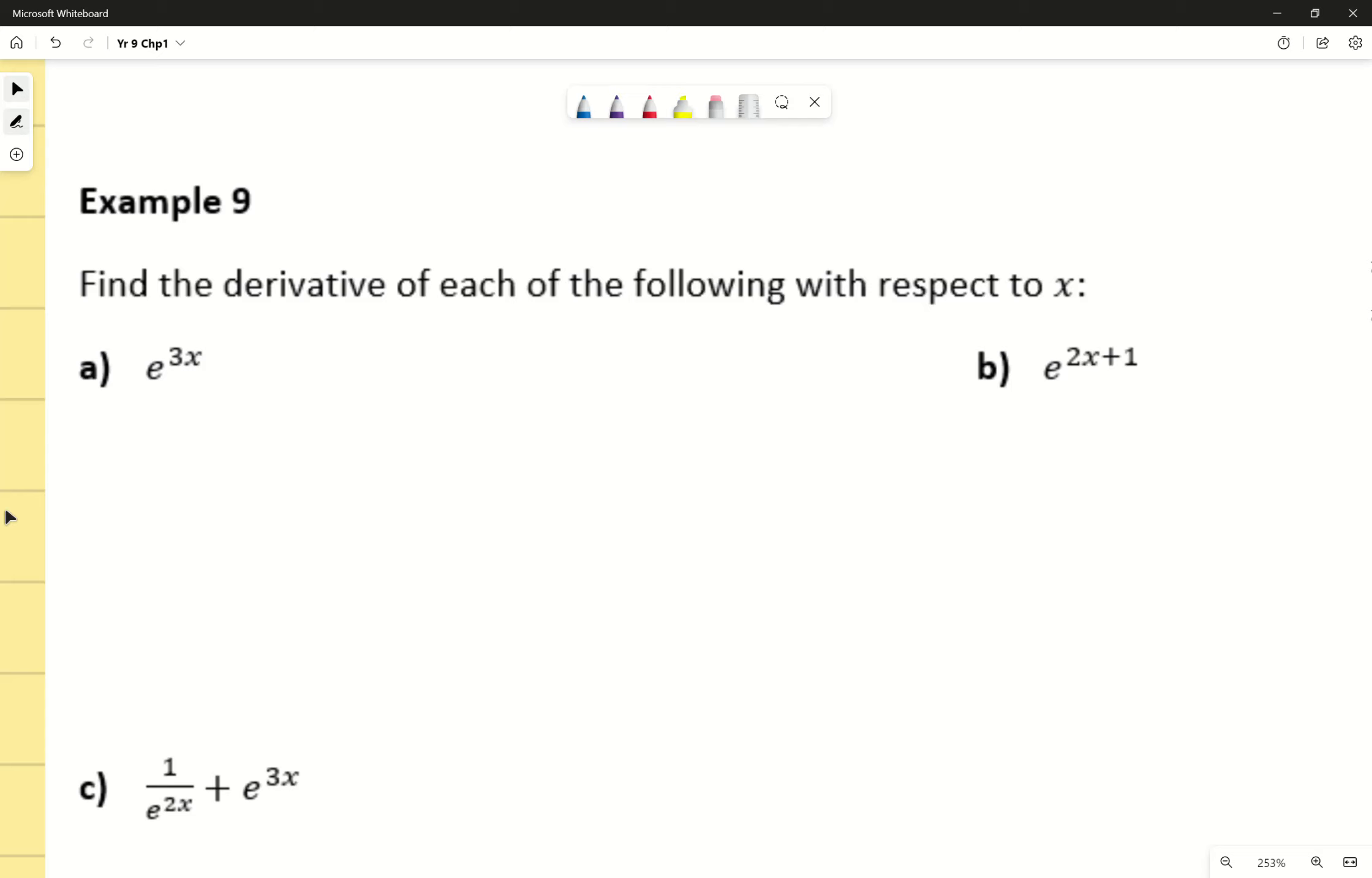Find the derivative of each of the following with respect to x. Applying our previous formula, we know that e to the power of 3x is going to be derived to give us 3, because that's what we get from deriving the power right there. So that's 3 times e to the power of 3x.